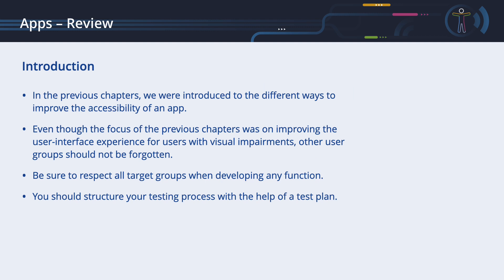In the previous chapters, we were introduced to the different ways to improve the accessibility of an app. No matter what operating system the app will run on, or what kind of development process or programming language you use, accessibility is a feature that should not be neglected. All the development approaches we have discussed offer mechanisms for improving accessibility. Even though the focus of the previous chapters was on improving the user interface experience for users with visual impairments, other user groups should not be forgotten.